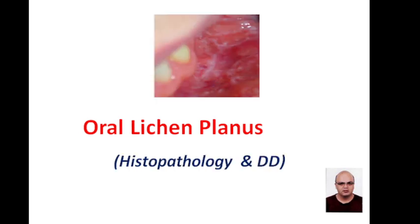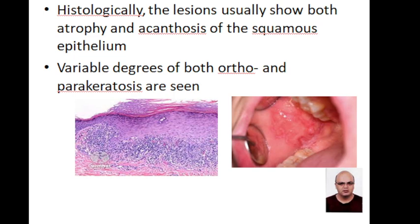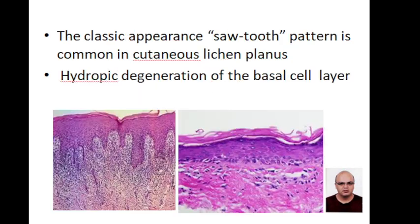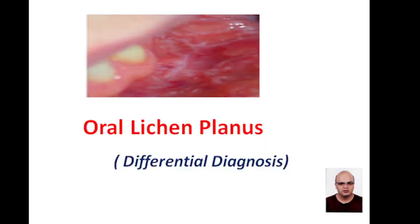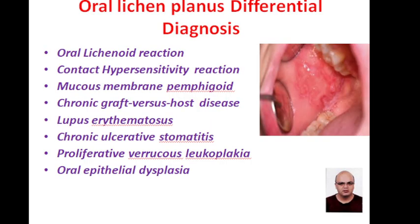Coming to histopathology and differential diagnosis of oral lichen planus, the lesions show atrophy and acanthosis of squamous epithelium. There are variable degrees of both ortho and parakeratosis. Classical appearance of saw-tooth pattern is common in cutaneous lichen planus. Hydropic degeneration of basal cells is seen, and lymphocytic infiltrate is seen in the form of a band-like pattern subepithelially.